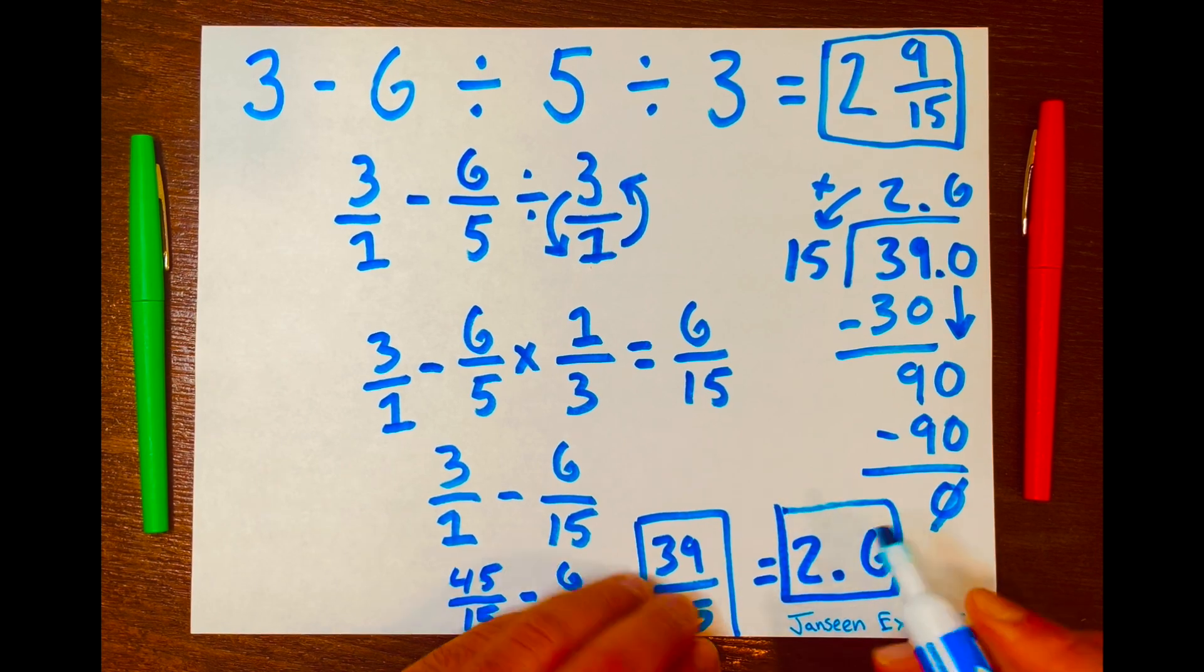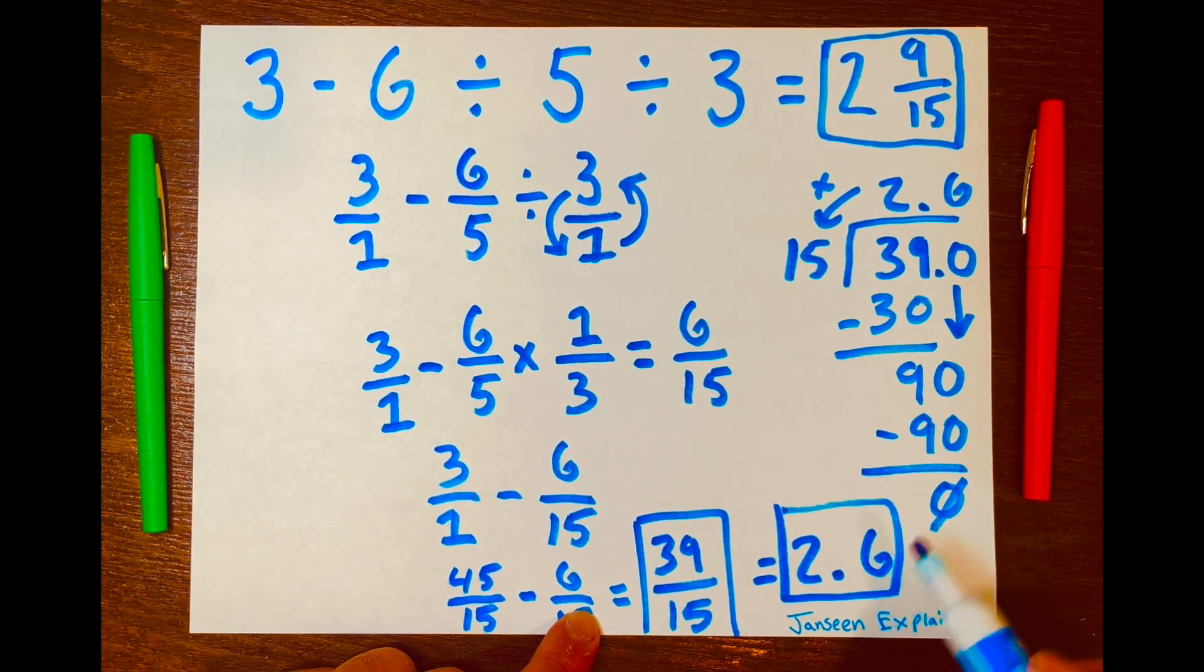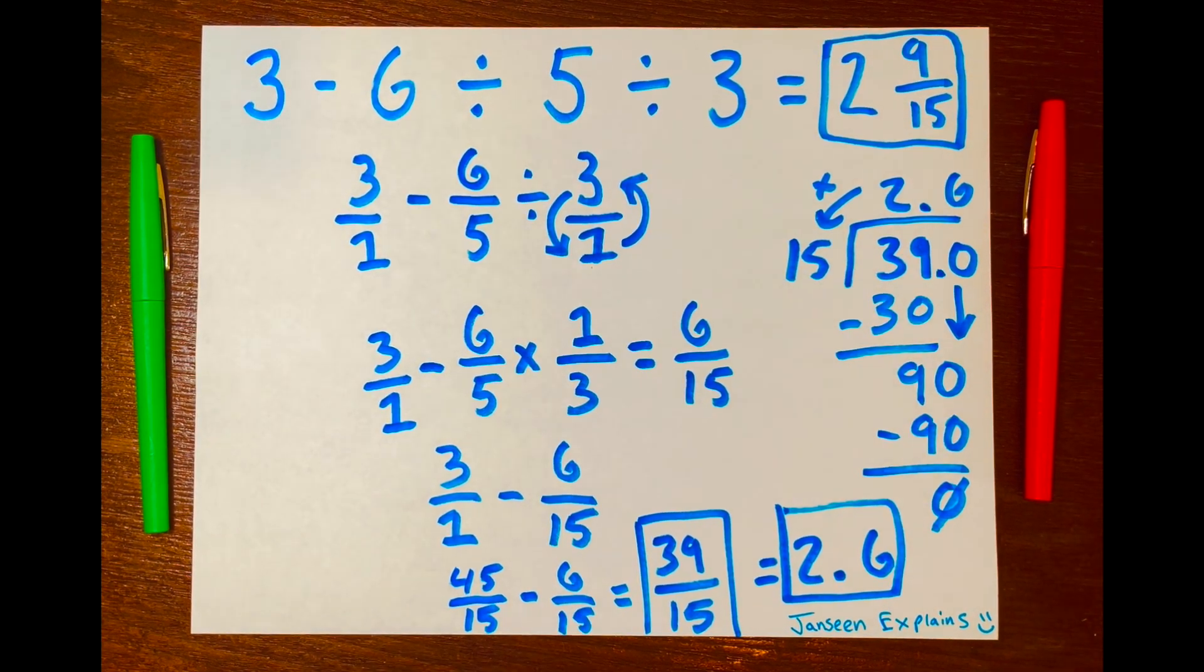And there you go. You have three different answers. You have 39 over 15, 2.6, and 2 9 over 15. And there you go.